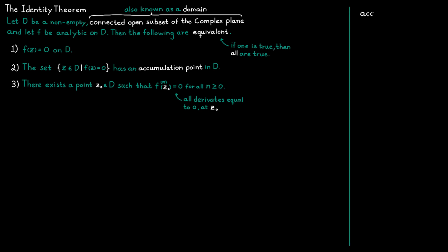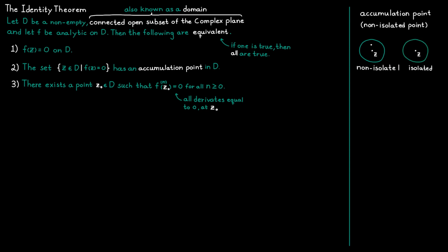An accumulation point should be thought of as a non-isolated point for a set. A point z is non-isolated for a set if, no matter how small a circle we draw around it, we still find some other point from the set inside that circle — which is not the case for an isolated point, which will always be alone. This also means every point in an open set is by definition non-isolated, and since a domain is an open set, every point in a domain is also non-isolated.